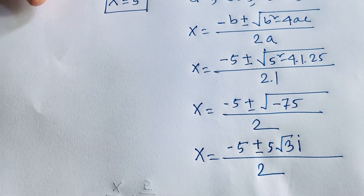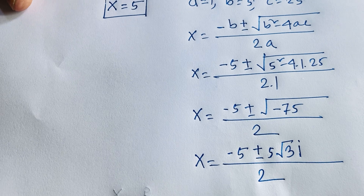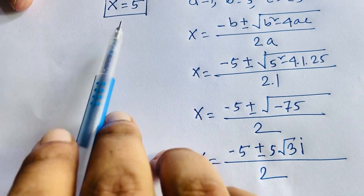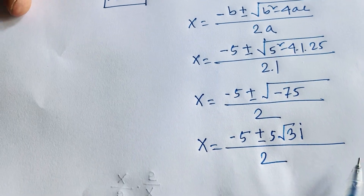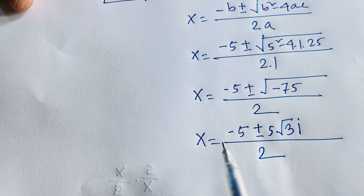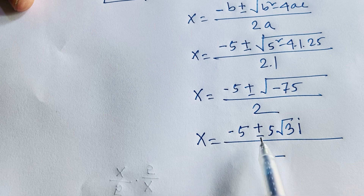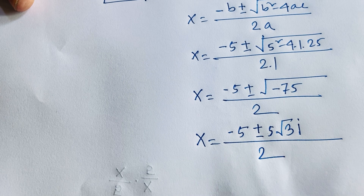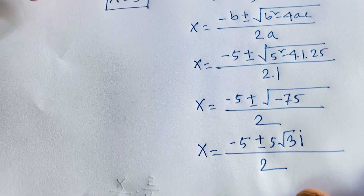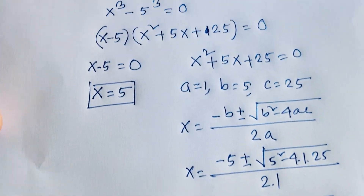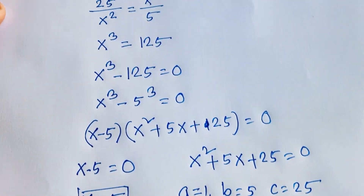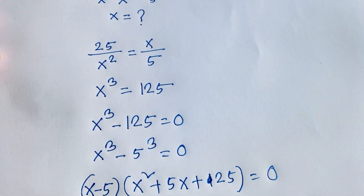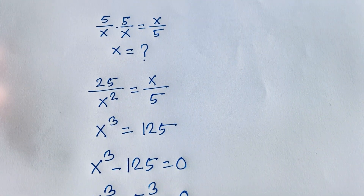So our final answers are: x equals 5, and x equals minus 5 plus or minus 5 square root 3i, all over 2. Thank you all — if you enjoyed this video, subscribe to the channel for more interesting videos. Goodbye, take care.